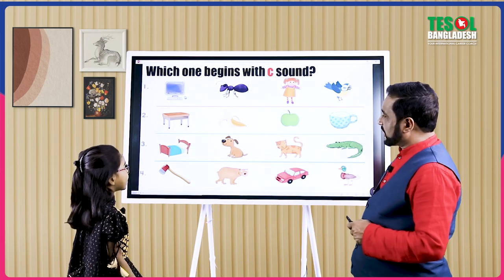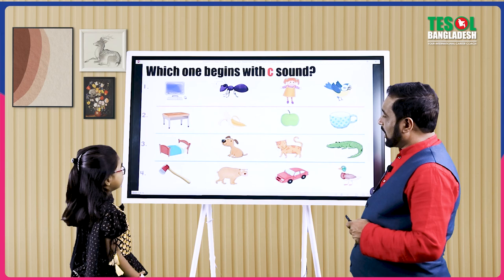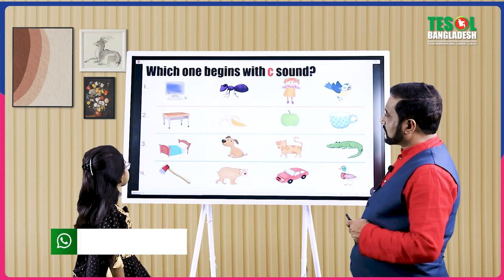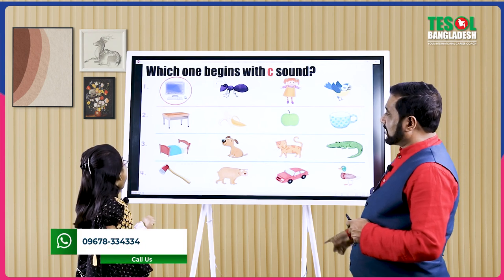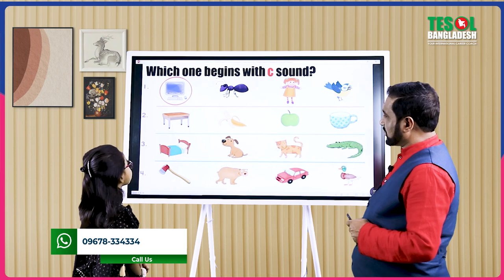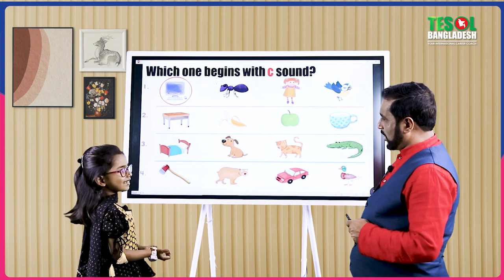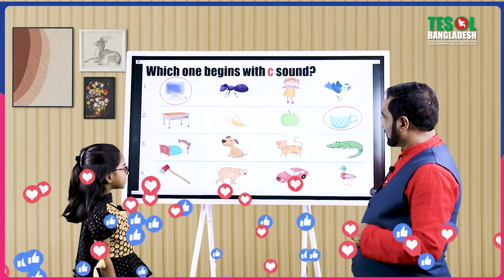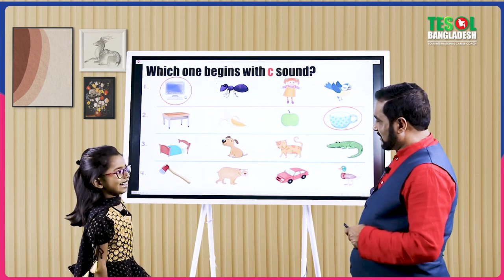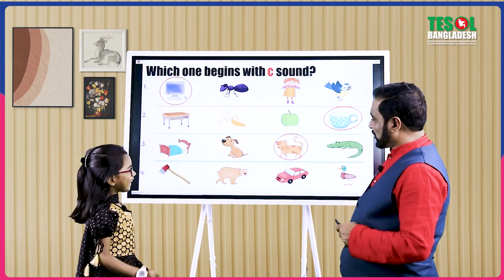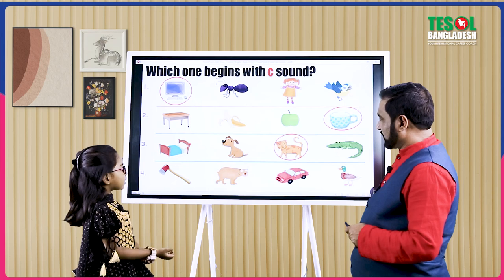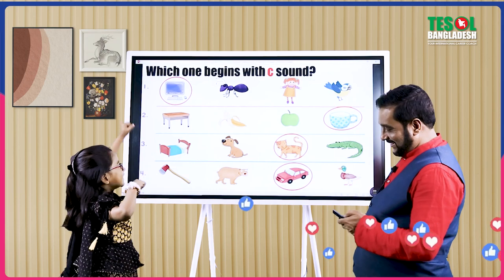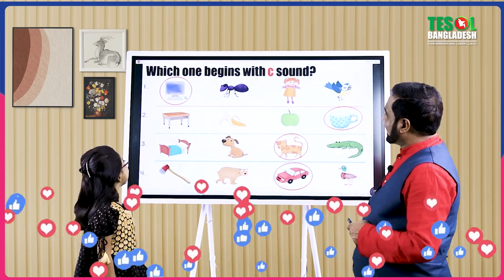There's another page on A and B. Which one begins with K sound in the first row? Computer. That's right. And the second one — which one begins with K sound? Cup. Are you sure? Yeah. You're right. And the next one — which one begins with K sound? Cat. Are you sure? Yeah. Right. And the next one — which one begins with K sound? Car. Sure. Okay. I won again! You won again, yeah.